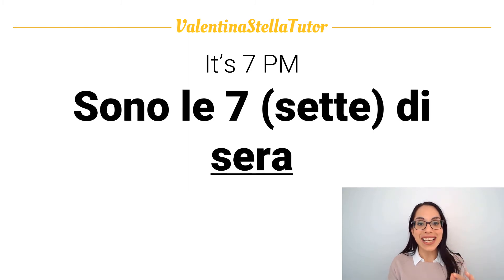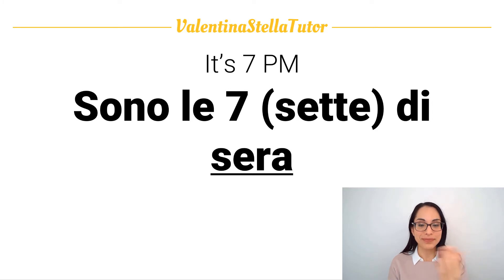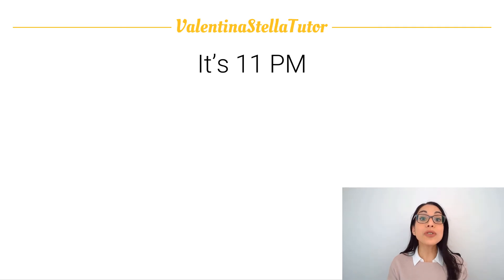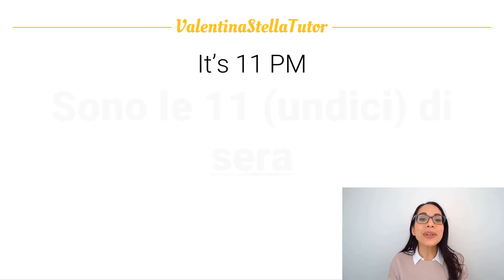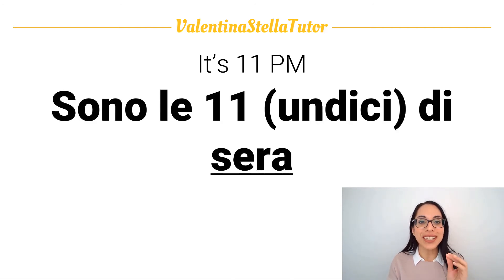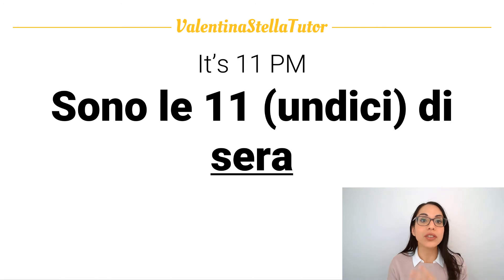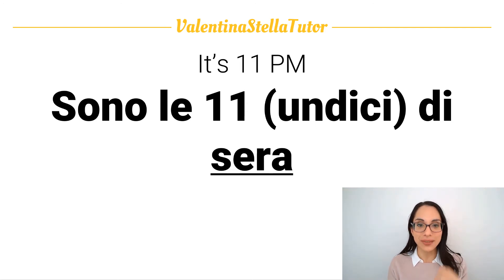So if you want to say 'it's 7 PM' in Italian, that is 'sono le sette di sera.' Repeat: sono le sette di sera. If you want to say 'it's 11 PM,' as weird as it may sound, we say 'sono le undici di sera.' We never say 'sono le undici di notte' — no, that's not night yet for us. Repeat: sono le undici di sera.